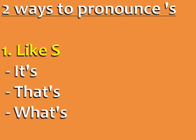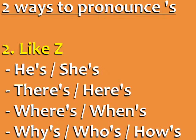There are two ways to pronounce apostrophe S. It is pronounced like S in these words: it's, that's, what's. Apostrophe S is pronounced like Z in these words: he's, she's, there's, here's, where's, when's, why's, who's, how's.